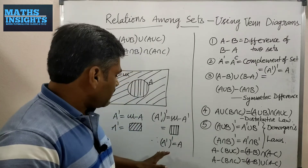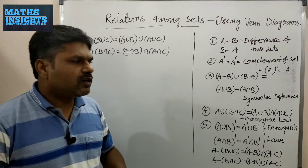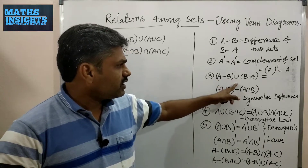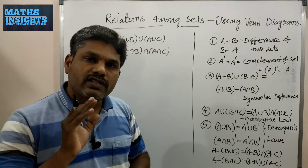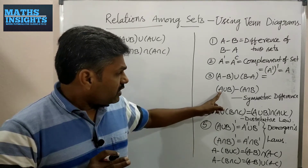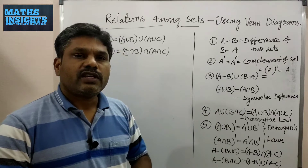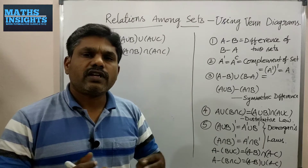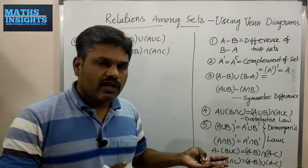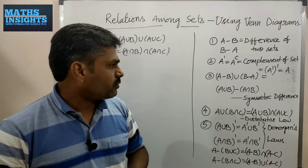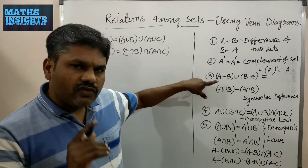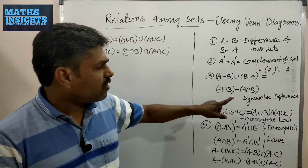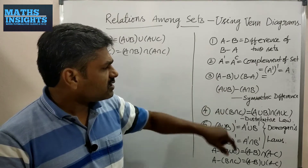We have proven that (A')' equals A. Coming to the third important law: A minus B union B minus A, and A union B minus A intersection B — these two both represent the symmetric difference of two sets. We will show that the area representing A minus B ∪ B minus A is the same as A∪B minus A∩B, and conclude that these two are equal.